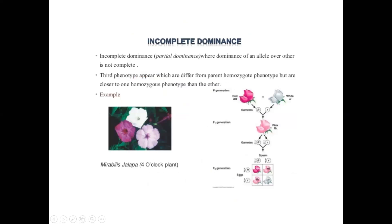Now moving to incomplete dominance, which is the last topic of gene interaction. Incomplete dominance is where the dominance of an allele over another is not complete — a particular character is not fully expressed. A third phenotype appears which is different from either parent phenotype but closer to one homozygous form than the other. The example is Mirabilis jalapa, the four o'clock plant, where one flower is red, one is white, and the cross produces a light pink color.